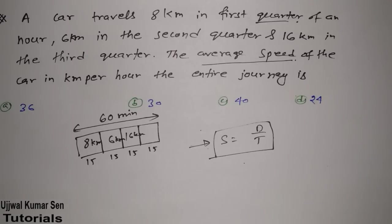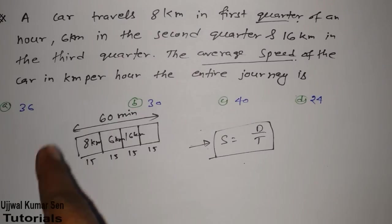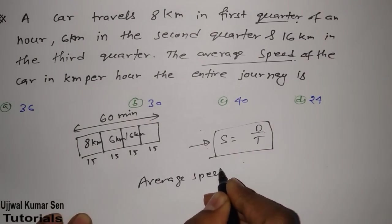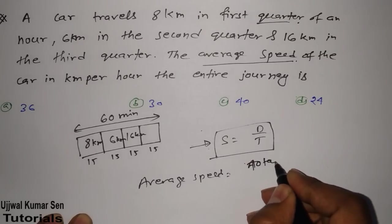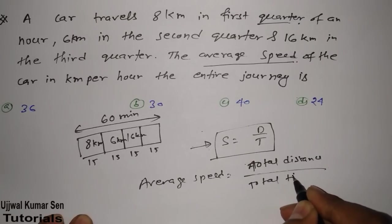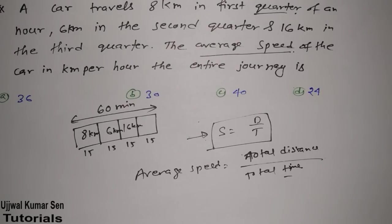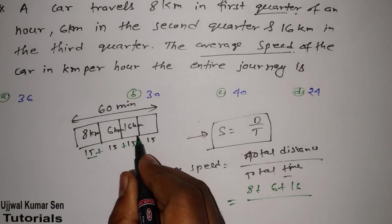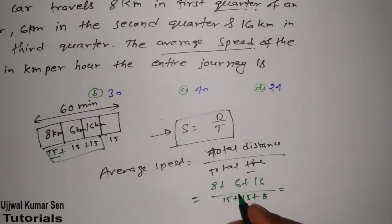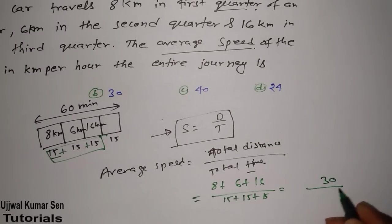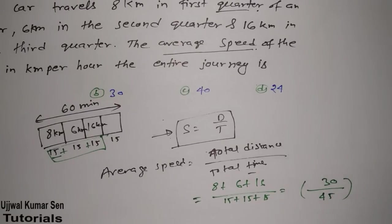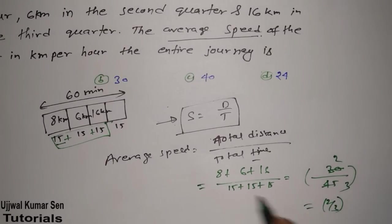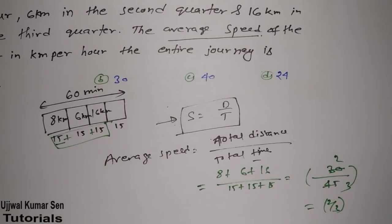If you draw the question like this, things become quite easier. Average speed equals total distance divided by total time. Total distance is 8 + 6 + 16 = 30 kilometers. Total time is 15 + 15 + 15 = 45 minutes. So we get 30 divided by 45, which simplifies to 2 by 3 — but this does not match the expected answer.